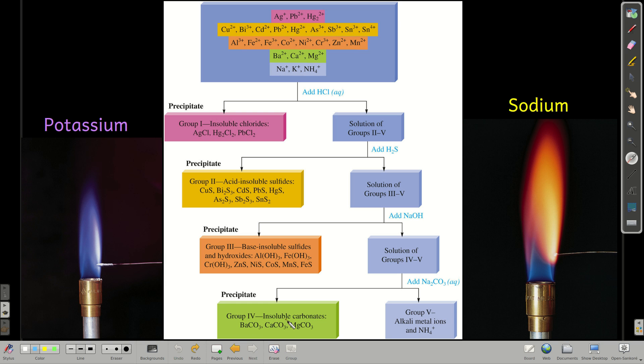And we get the insoluble carbonates, which are barium, the alkaline earth metal carbonates: barium, calcium, and magnesium, leaving behind just the alkaline metal ions, sodium, potassium, and ammonium.